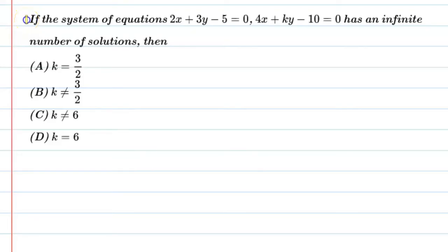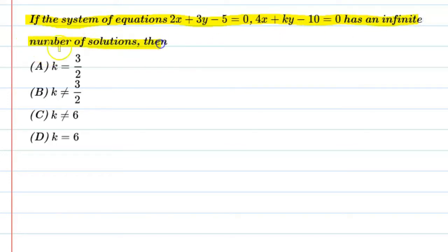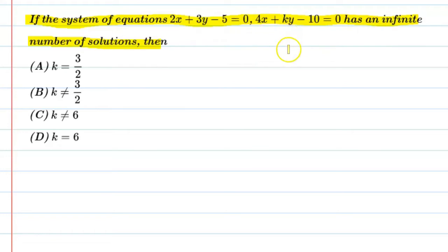Hello students, let's solve this question. If the system of equations 2x + 3y - 5 = 0 and 4x + ky - 10 = 0 has an infinite number of solutions, then we need to find the value of k. This is a very simple question, so let's begin.